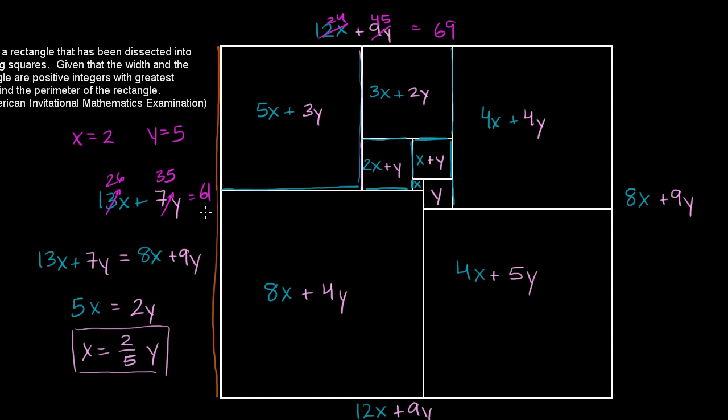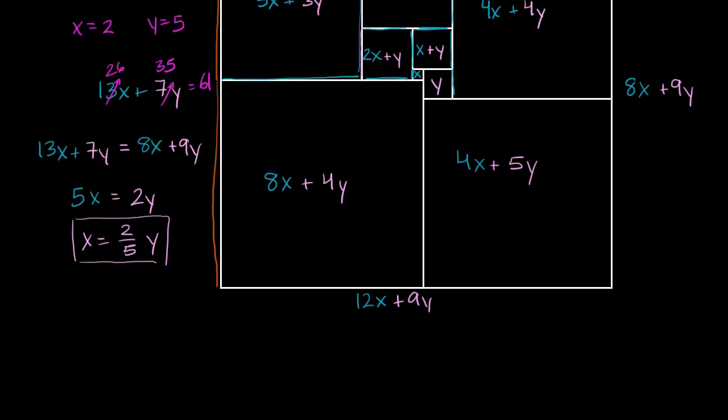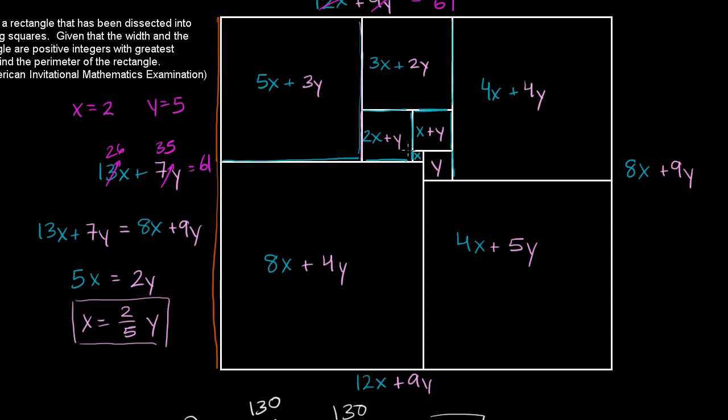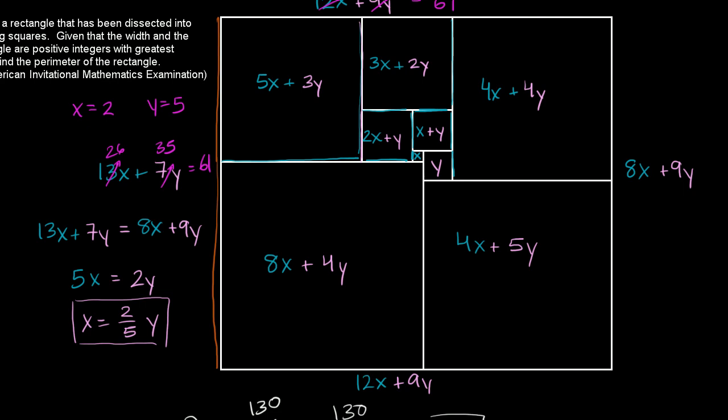So it looks like we're done, or we're almost done. We know the dimensions of the rectangle, it is a 61 by 69 rectangle. And if you want its actual perimeter, you just add them all up. So the perimeter is going to be 61 plus 69 plus 61 plus 69, which is 130 plus 130, which is 260. So it wasn't too bad of a problem. We just started at the middle and built up the dimensions in terms of the dimensions of these two smallest squares, and then we were able to find the perimeter.